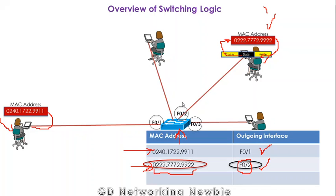The MAC table is important because it holds all the information about what nodes are available, what their MAC addresses are, and to which port or interface they are connected. These are the ports — they will have a cable connected there. By looking at this database, the MAC table, the switch forwards frames from one node to another.